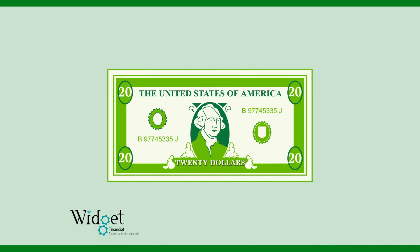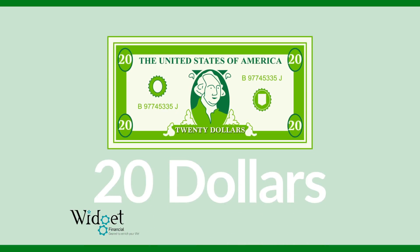A twenty dollar bill looks like this. Notice it has the number twenty in each of its corners. That means this bill is worth twenty dollars.